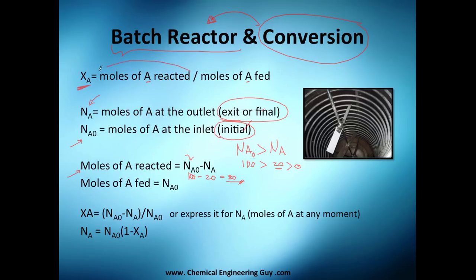The moles of A being fed is way easier, it's essentially just the initial amount of A, which is NA0. So now you got your definition. Let's go back here. XA equals the total amount of moles being reacted, which is this here we told you right now, divided by the initial amount being fed, which is here.